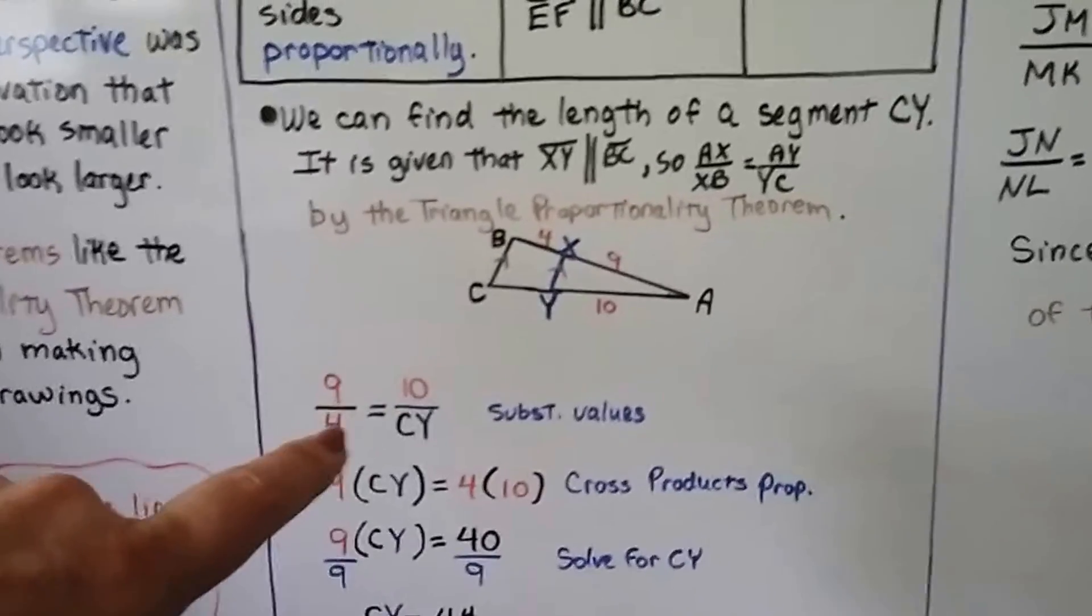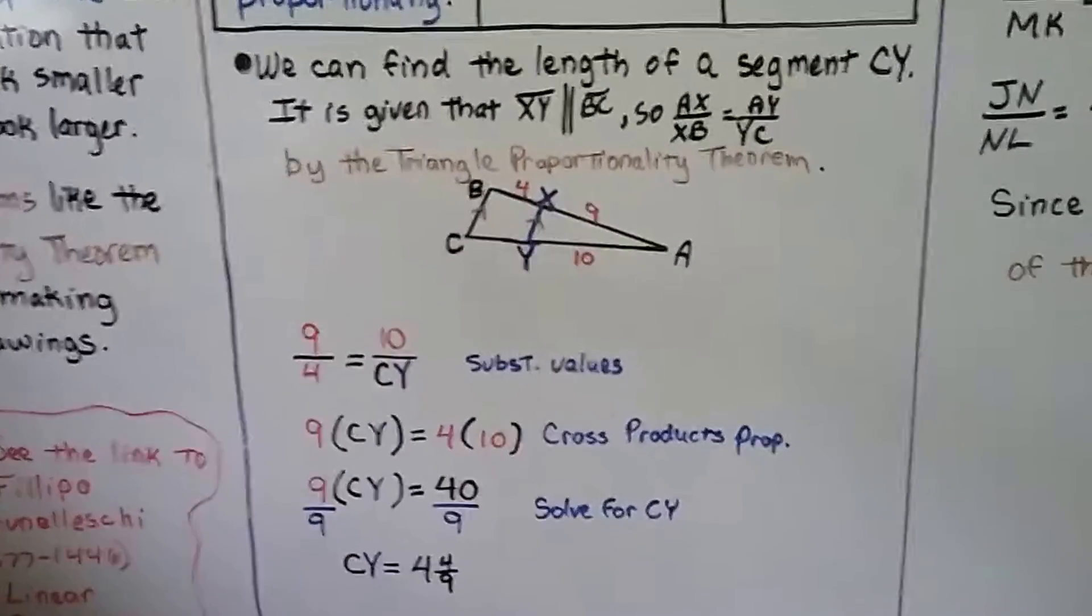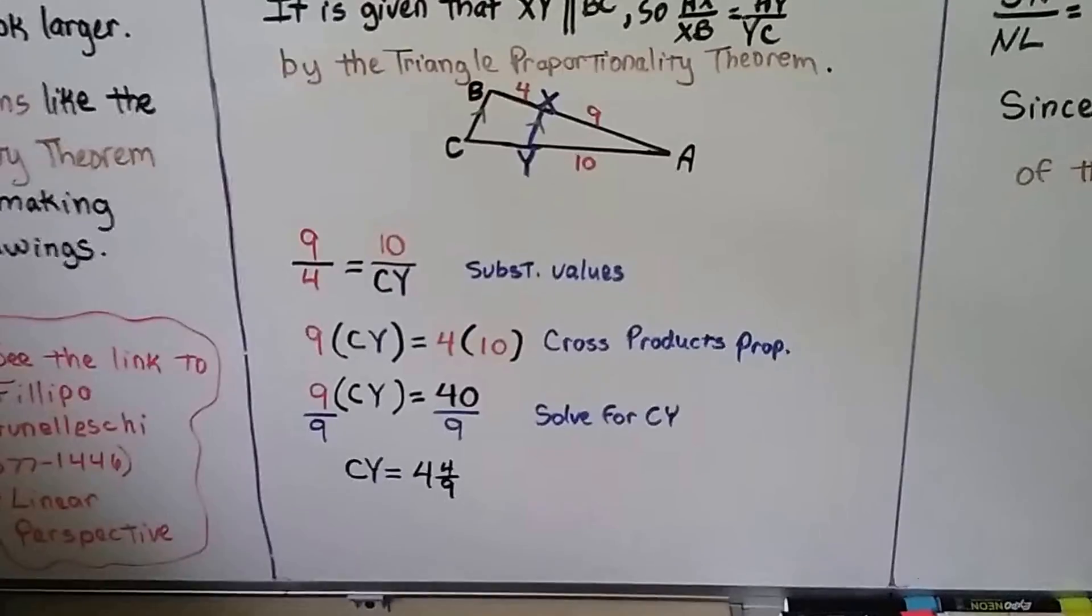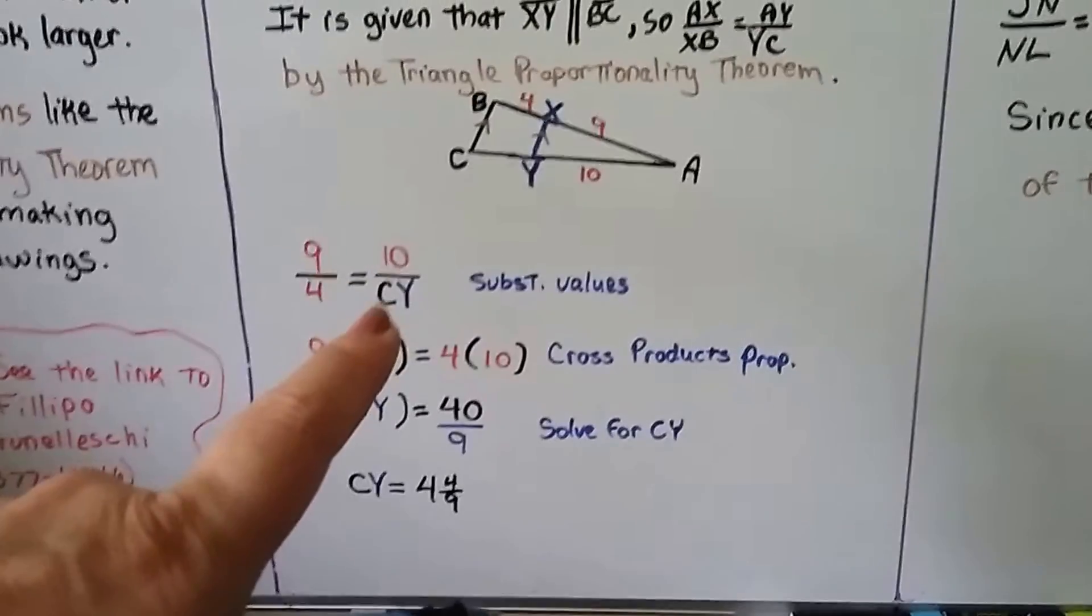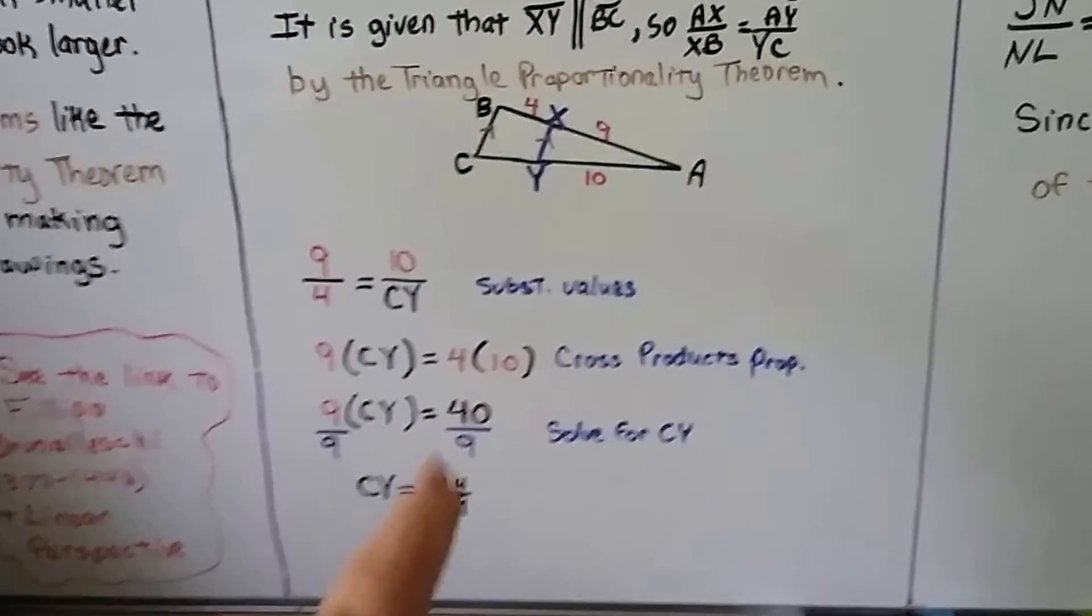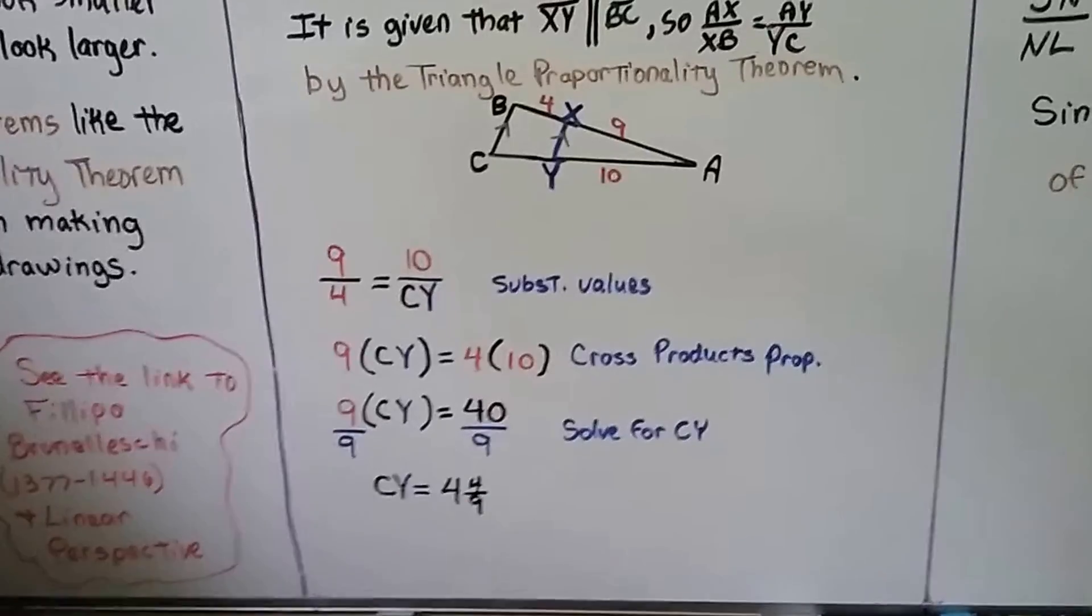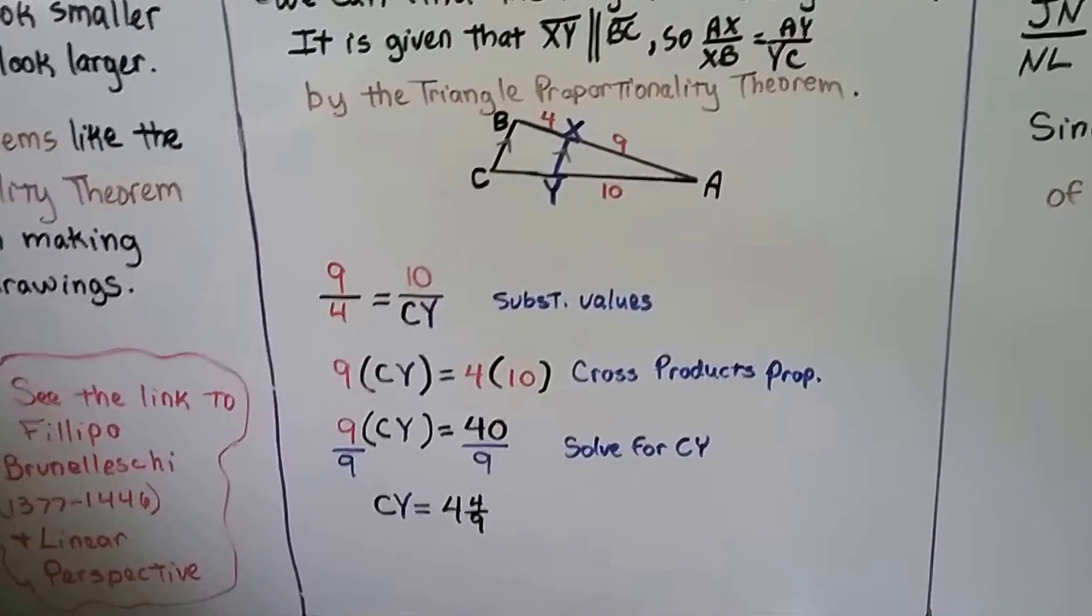So we put the nine over the four equals ten over the CY, substituting in the values. And we can do the cross products property. We can do nine times CY is equal to four times ten. Four times ten is forty. And we can divide both sides by this nine to solve for CY, and we know it's equal to four and four ninths.